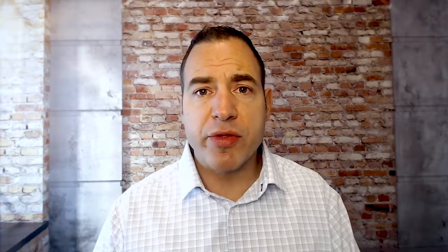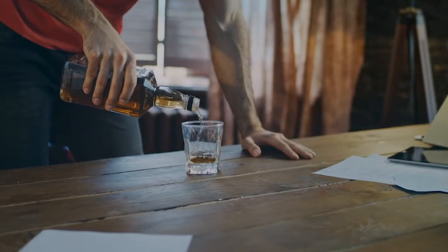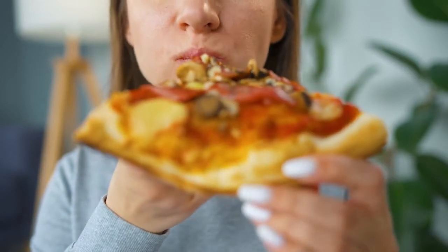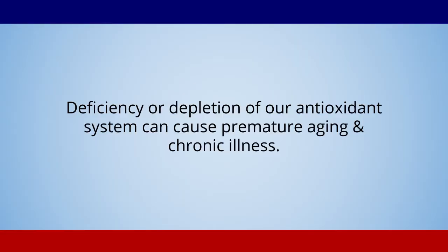It appears that when we get over-oxidized from our environment — whether that's through EMFs, smoking, drinking, the standard American diet, all the things in our environment that have the capacity to oxidize our bodies from the outside in — that can deplete our own antioxidant system. And as our own antioxidant system gets depleted, we have a harder time dealing with that and we become over-oxidized. And I think that's what we're seeing with premature aging and a lot of chronic illness: this deficiency and/or depletion of our antioxidant system.